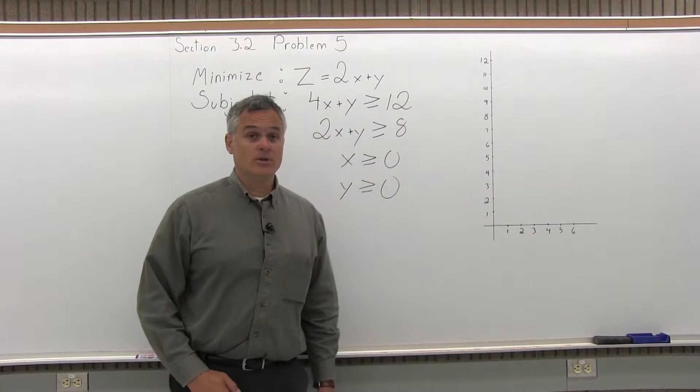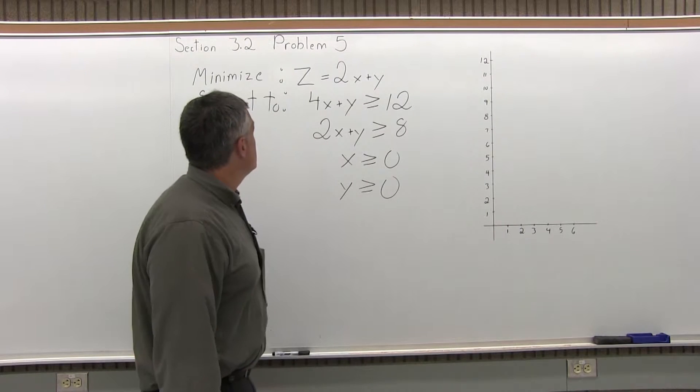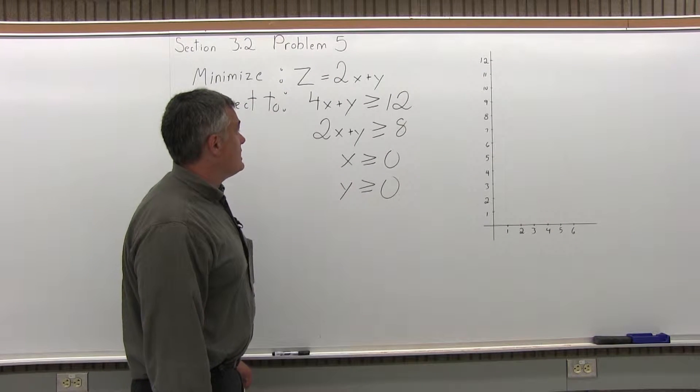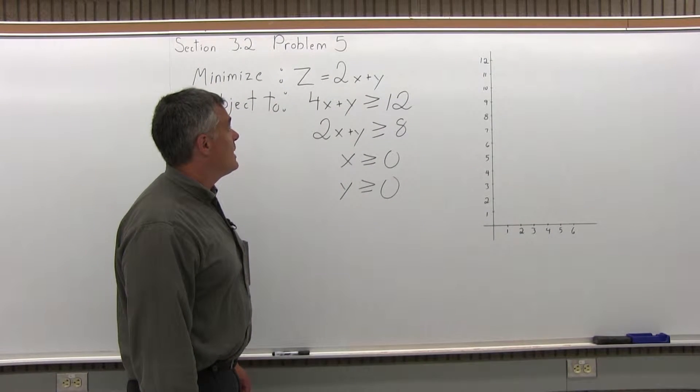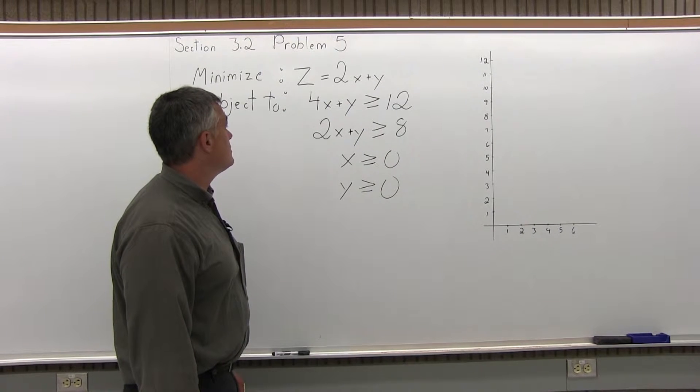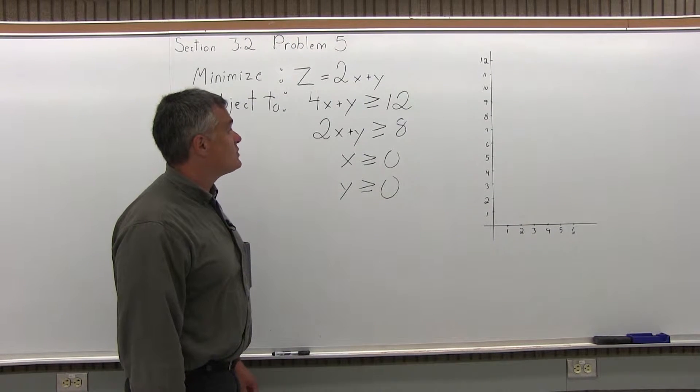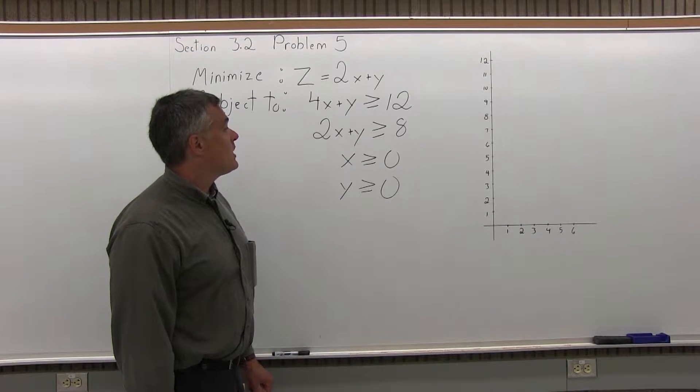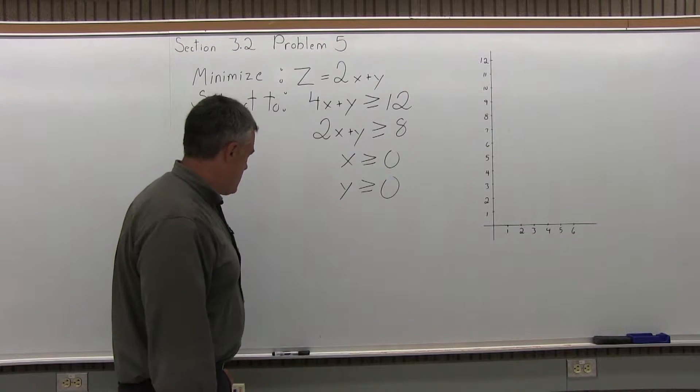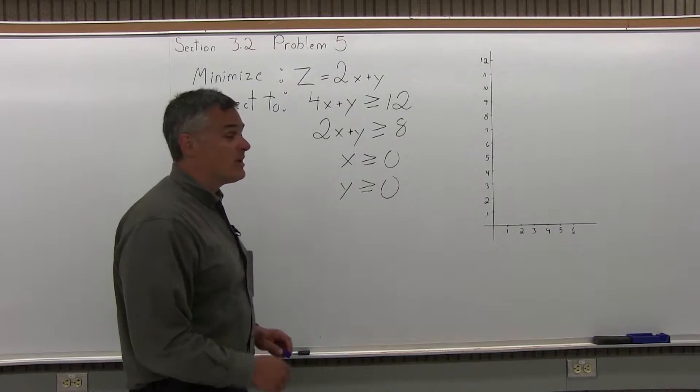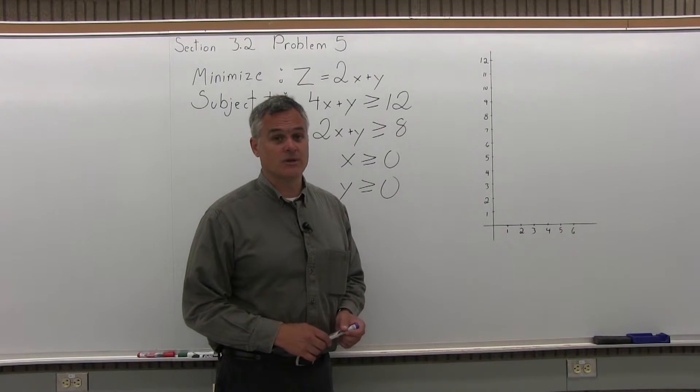This is Section 3.2, Problem 5, and it says minimize z equals 2x plus y, subject to 4x plus y is greater than or equal to 12, 2x plus y is greater than or equal to 8, x is greater than or equal to 0, and y is greater than or equal to 0.